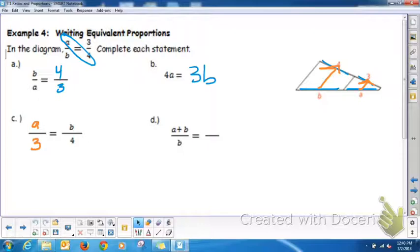And then here's an example of that last property. If you add the bottom to the top. So the initial proportion was a over b equals 3 over 4. Well, if I add the denominator to the numerator and have a plus b over b, then what would I have in the second half of our proportion? Well, I would add 4 to 3. 4 plus 3 is 7 over 4.